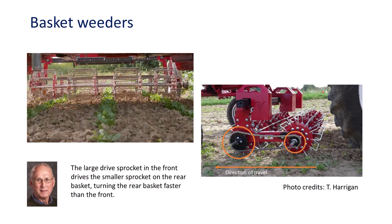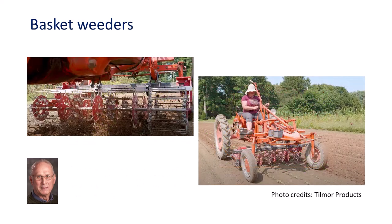A basket weeder works well for the first cultivation or preparing a stale seedbed for planting. It tills the top two to three centimeters of soil, breaking a crust and flicking small weeds in the white thread or cotyledon stage out of the soil to desiccate and die. Shallow cultivation avoids bringing up new weed seeds. This weeder does not hill up soil next to the row, so you can go right next to the row in a newly seeded crop. The baskets are ground-driven; the front basket engages the soil first, breaking it up before the rear basket. With a large sprocket on the front and a small sprocket on the rear, the rear basket turns faster, accelerating the wires and throwing out the weeds. The front basket runs about two to three centimeters deeper than the rear basket.